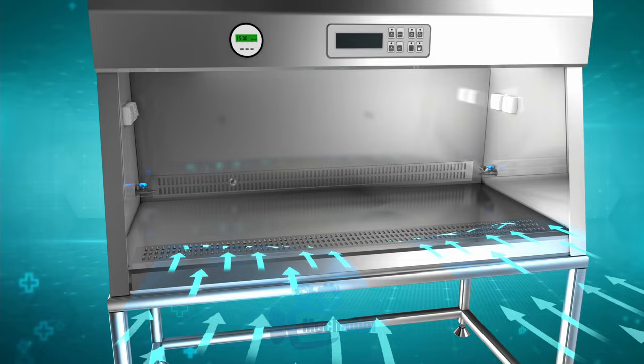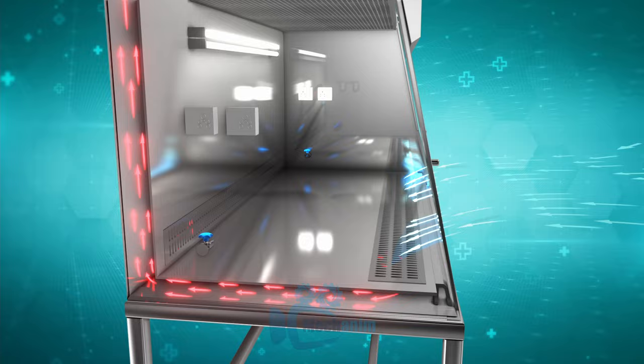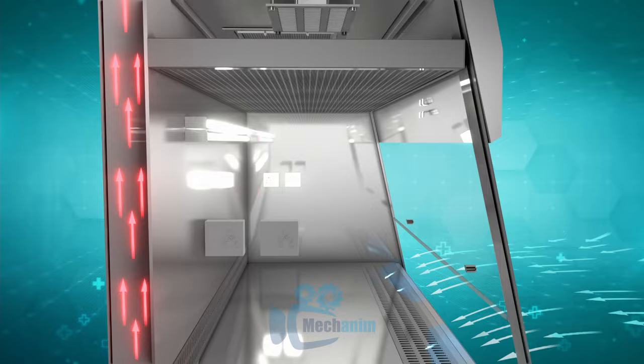Dirty room air is drawn into the front of the cabinet and mixes with contaminated air from the chamber. Contaminated air is pushed below the work surface. Incoming air moves to the plenum located on the back side through underneath the work surface and rises up to the blower.